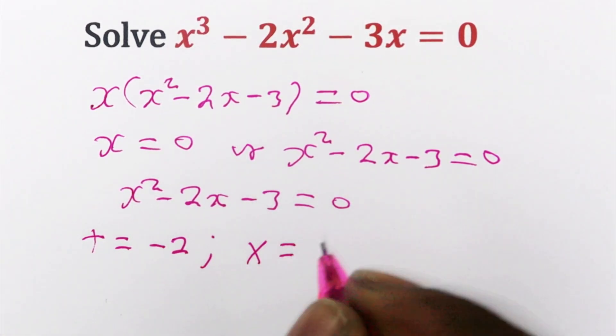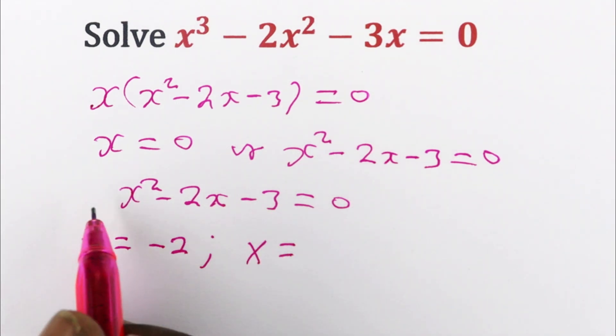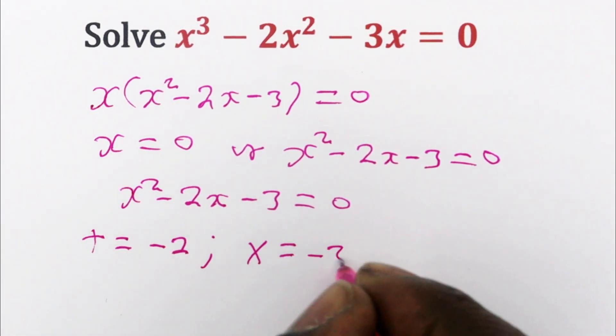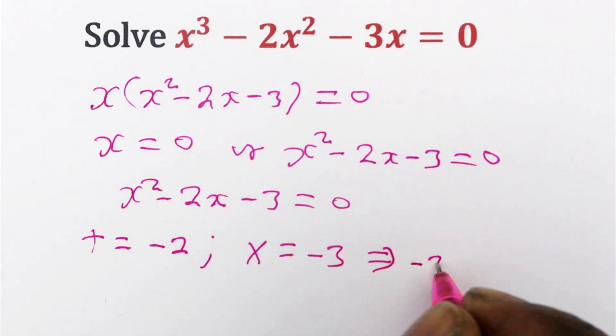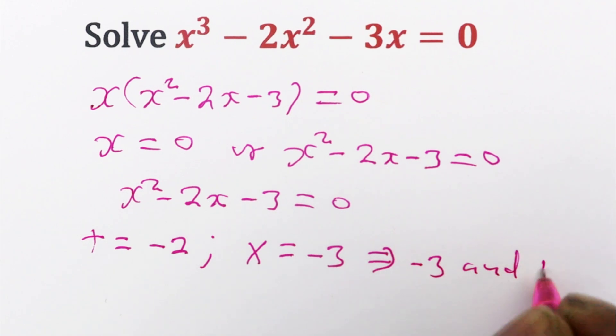And their product should be the same as a times c. That is 1 times negative 3, which is negative 3. And you'll find that those two numbers are negative 3 and positive 1.